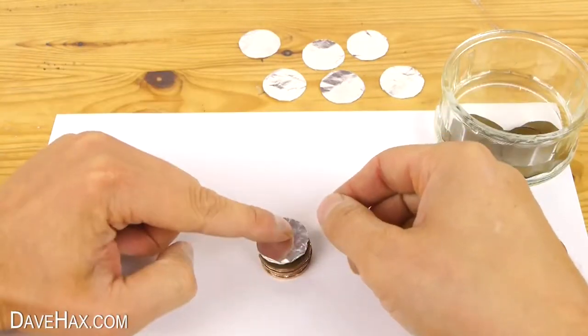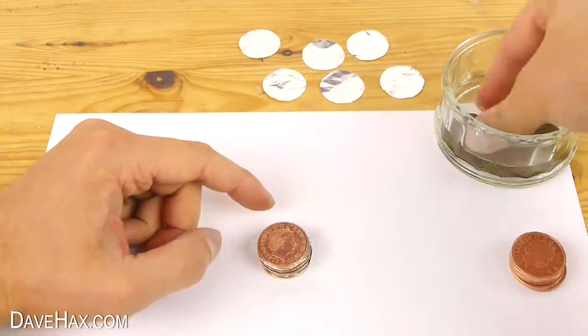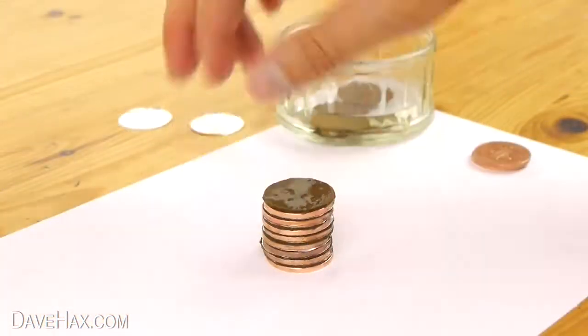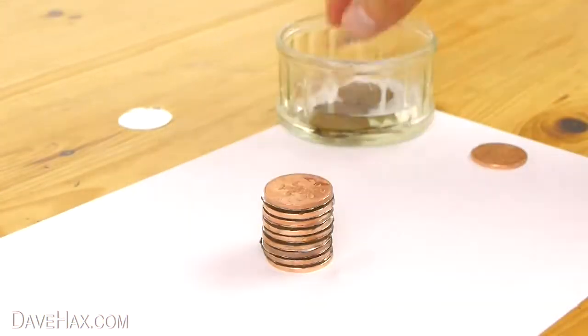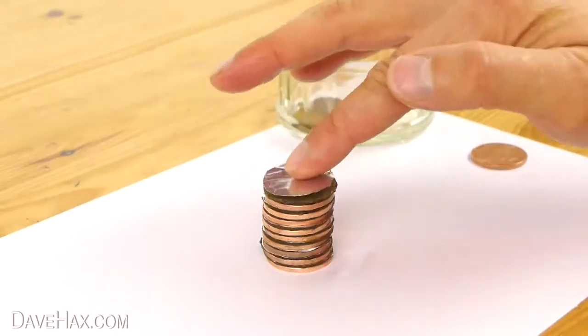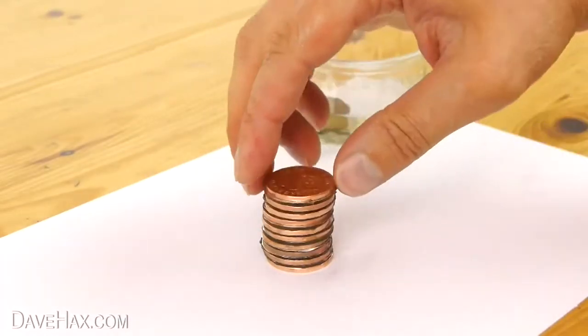You need to be careful that the foil doesn't fold down the side and contact any other layers. When you're done it should look like this.